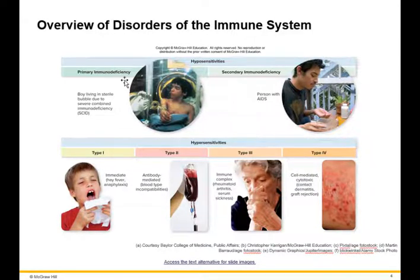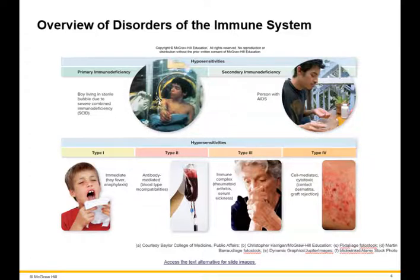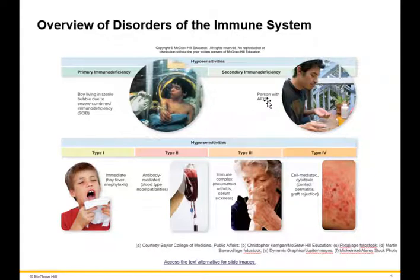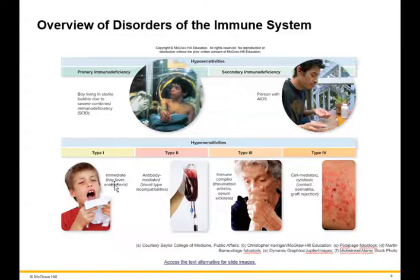Here's an overview of disorders of the immune system. If you have a hyposensitivity — an underreaction — you have primary immunodeficiencies, which are ones you're born with, usually some sort of genetic disorder. A secondary immune deficiency is one that is acquired, like someone with AIDS who has acquired the immunodeficiency from the HIV virus.